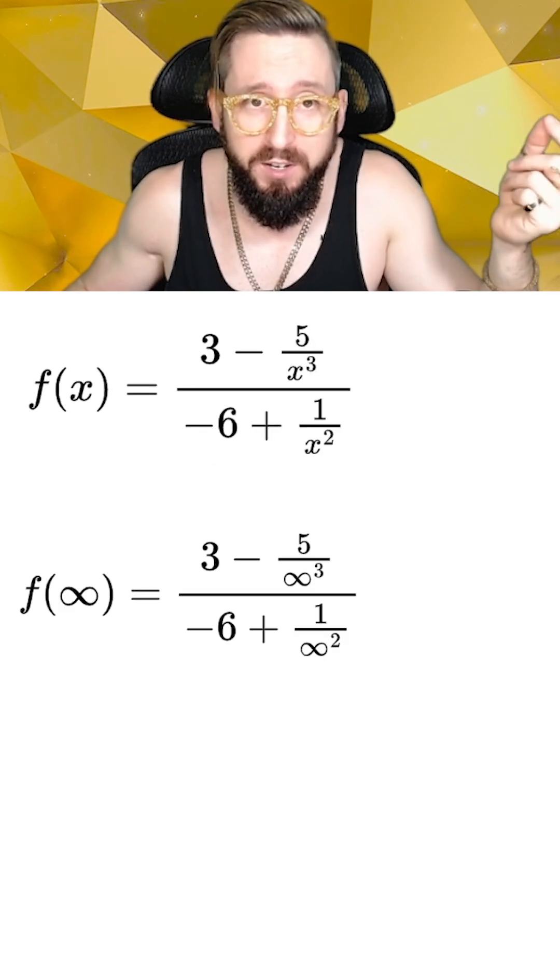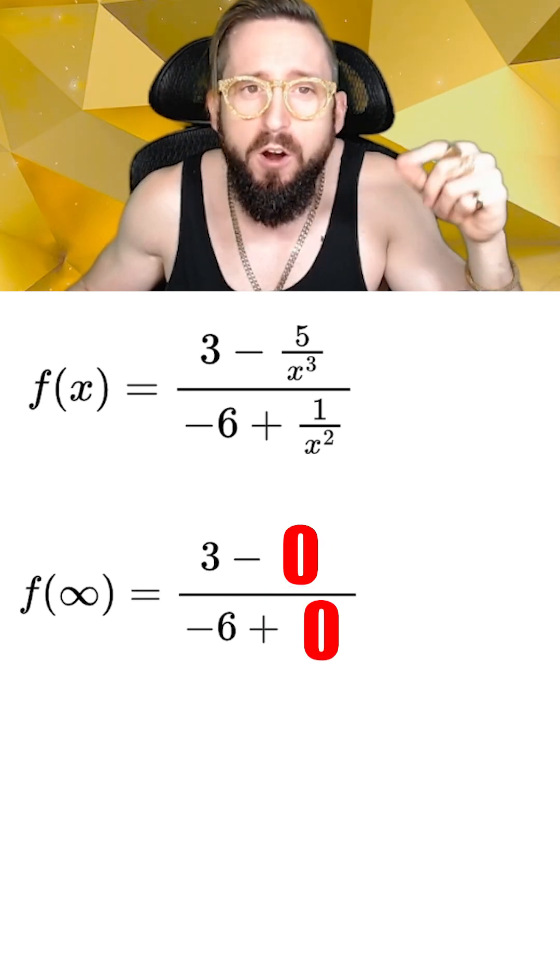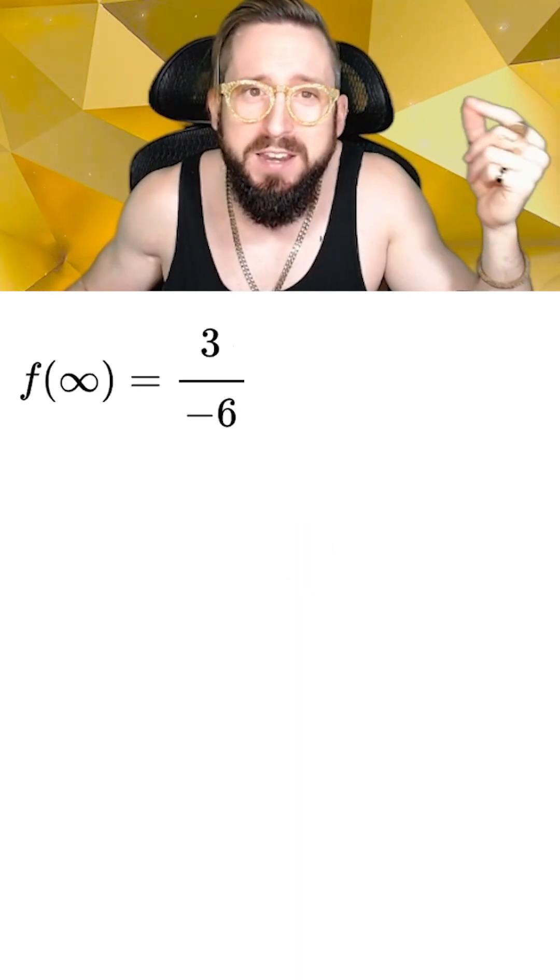Now we take the limit at infinity by plugging in infinity for x, and notice that these two far right terms will go to zero since they are a number divided by infinity. This leaves us with three divided by negative six.